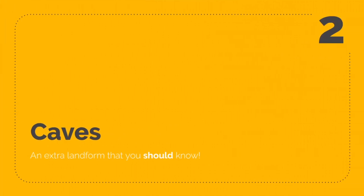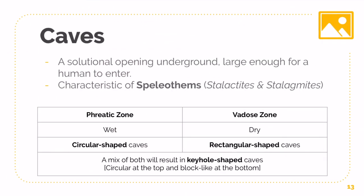Next I move on to Caves — an extra landform you ought to know, because a lot of students studying geography already understand what caves are. It is slightly more complicated, but it's essentially a subterranean, subsurface landform. It's good to know because when it comes to discussing your 20-mark essays and you need a form of balance, you can discuss on one hand how your surface landforms are affected by a factor like climate, and at the same time how your subsurface landforms are also being affected, weighing which factor plays the more important role. A cave is basically a solution opening underground that is large enough for a human to enter.